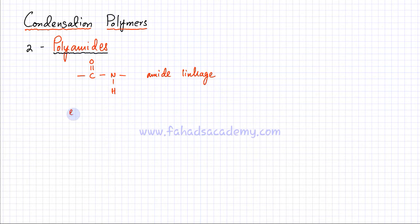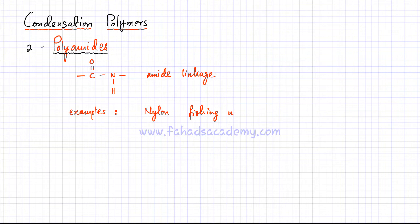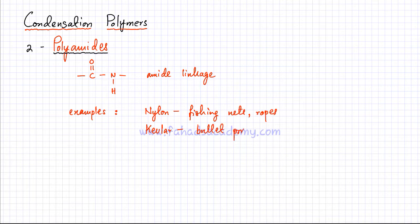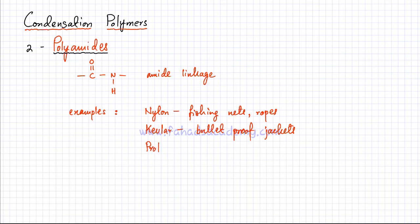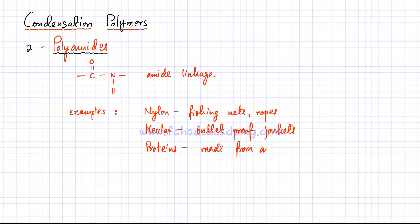Some examples of polyamides are nylon, which is used in fishing nets and ropes, and Kevlar, which is used in bulletproof jackets and is a very strong material. These are synthetic man-made polyamides. There is also a natural polyamide called proteins, or polypeptides, which are one of the building blocks of the human body. Proteins are made from amino acids, which are the monomer.